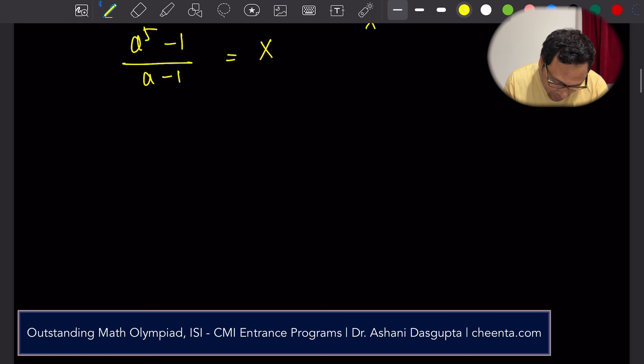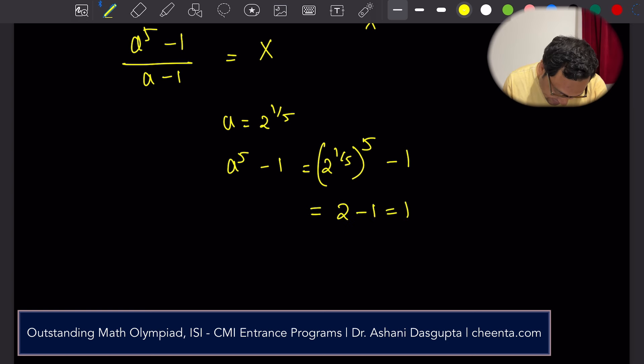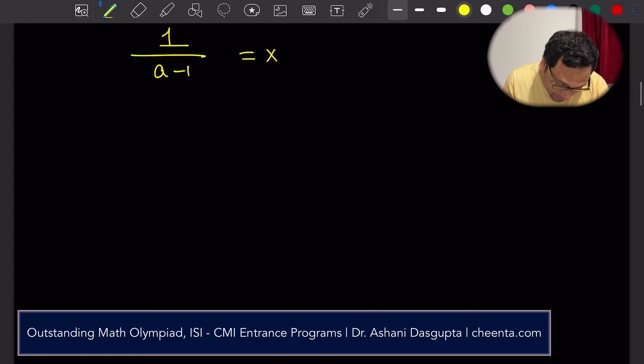So what is a to the power 5 minus 1? a is 2 to the power 1 by 5. So a to the power 5 minus 1 is 2 to the power 1 by 5 to the power 5 minus 1, which is 2 minus 1, which is 1. So what we see is 1 by a minus 1 is x. Or 1 by x is equal to a minus 1.